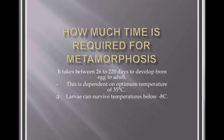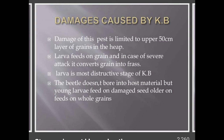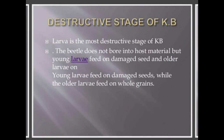The time required for complete metamorphosis is about 26 to 220 days. The damage caused by the Khapra beetle is limited to the upper layer of the grain heap because the larva feeds on grain, and in case of severe attack it can convert grain into frass. The larva is the most destructive stage of the Khapra beetle. The adult beetle does not bore into the host material, but young larva feed on damaged seed and older larva cause further damage.